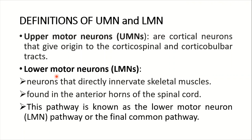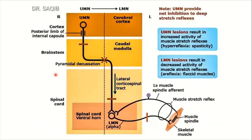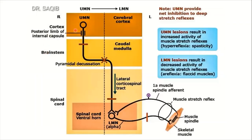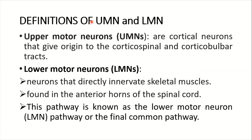Upper motor neurons are the cortical neurons that give origin to the corticospinal and corticobulbar tracts. These are the upper motor neurons coming from the cortex or even the brainstem. They are also known as the pyramidal tracts or corticospinal tracts. These upper motor neurons, the cortical neurons forming the corticospinal and corticobulbar tracts, arise from the cortex, pass through the posterior limb of the internal capsule, and also arise from the brainstem.